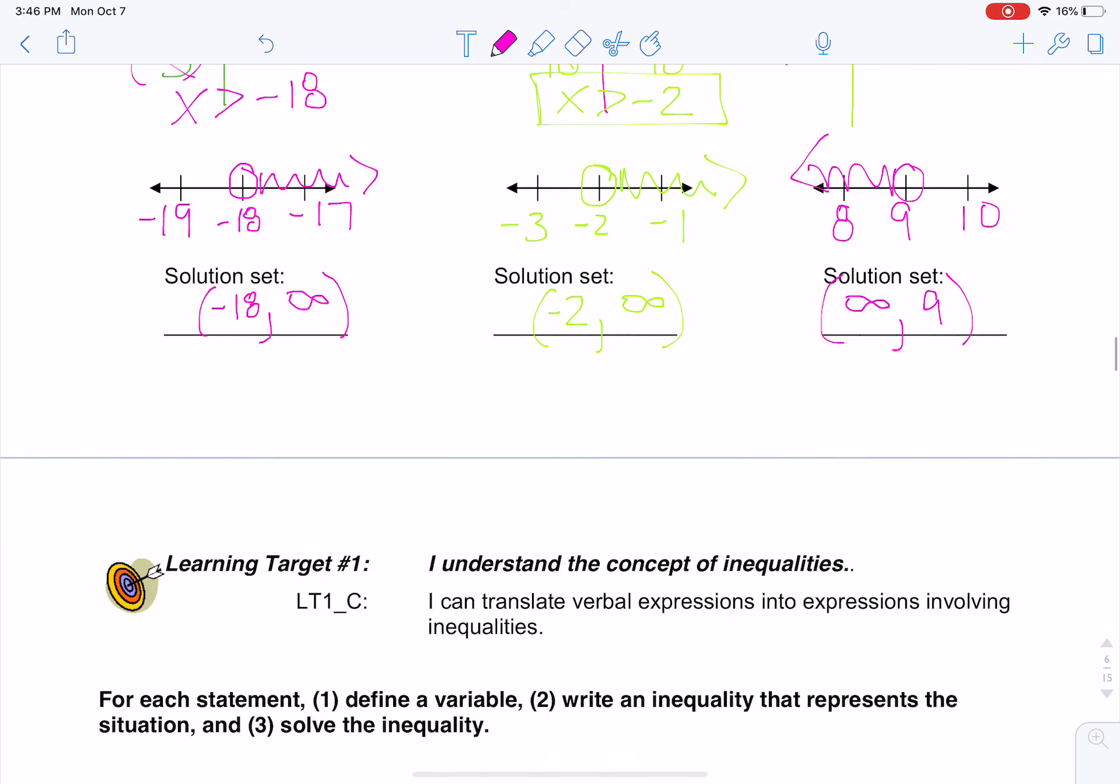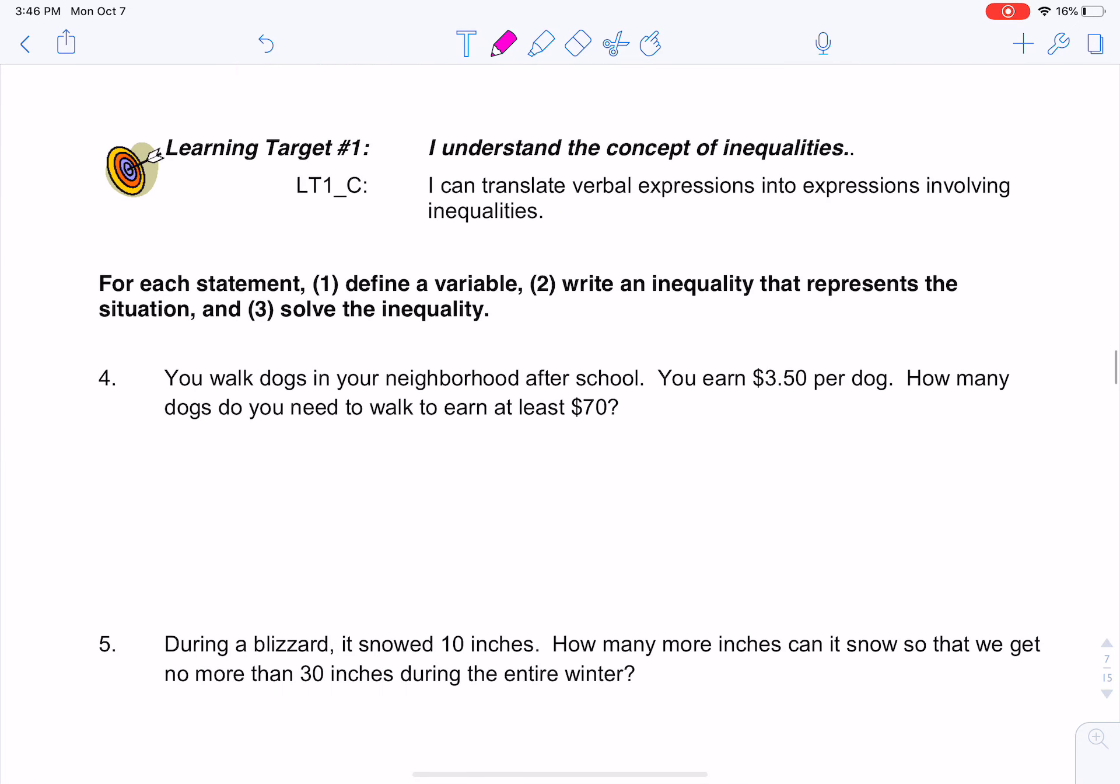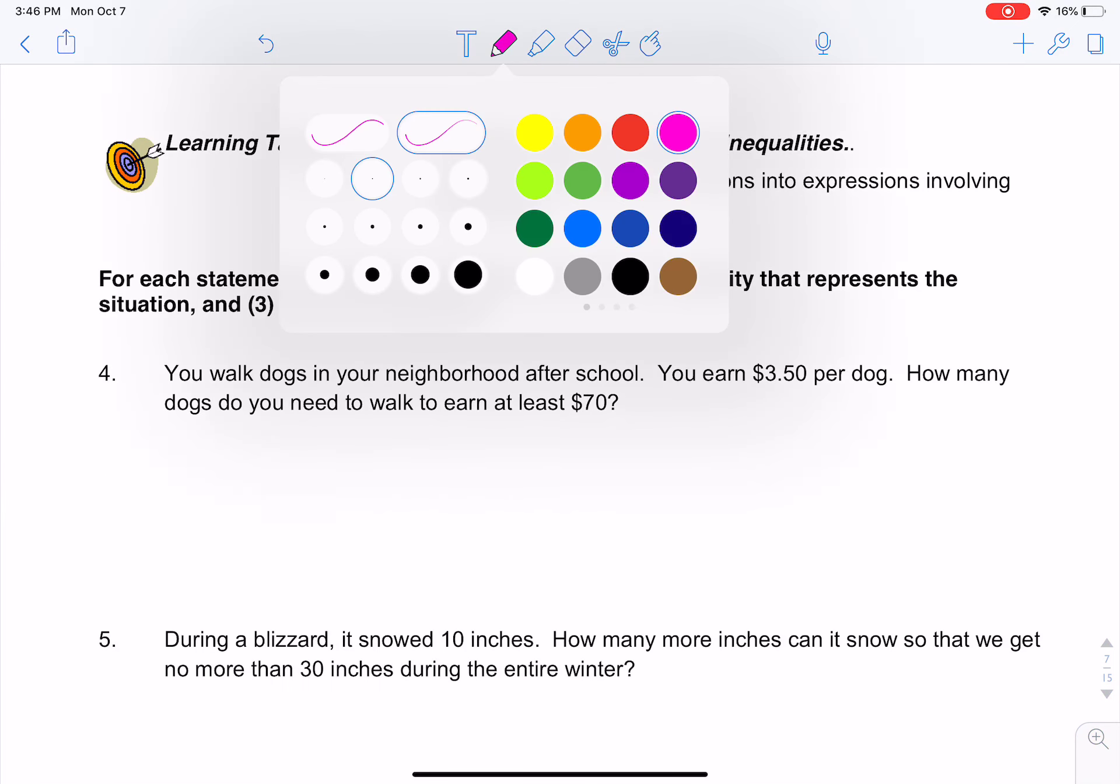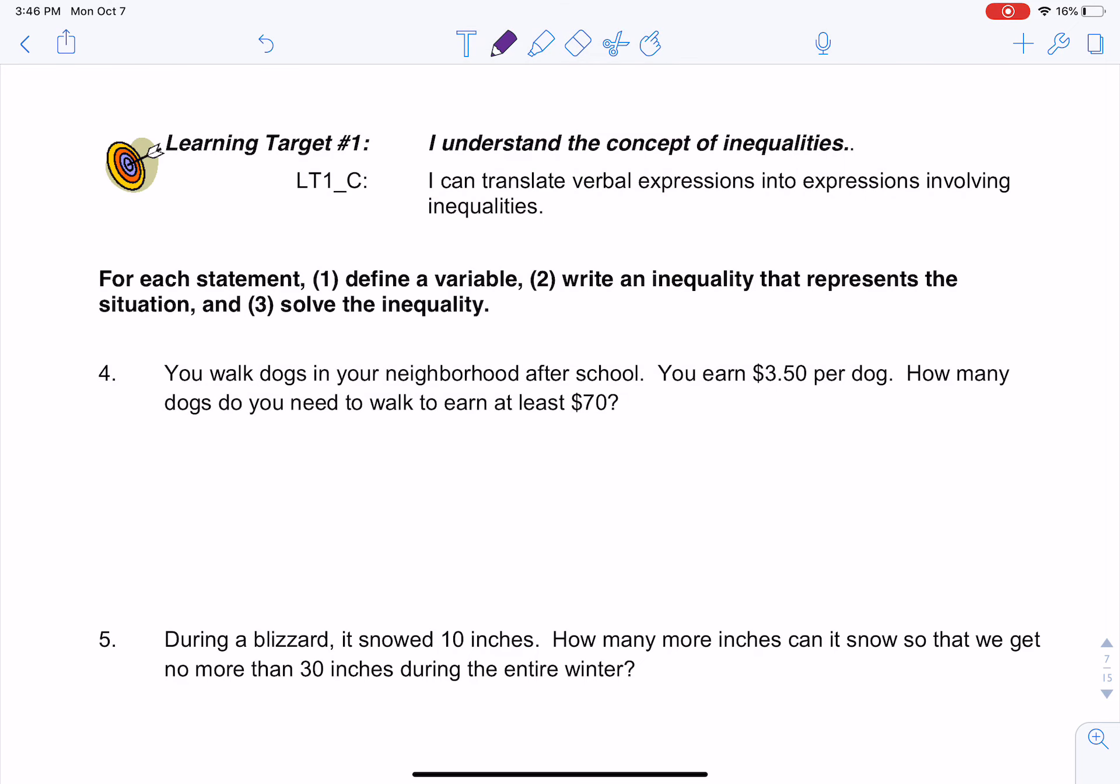Okay, so that's solving. A lot of review there. Now let's talk about translating, which can sometimes be the tricky part. So let us know if you need help with this. So let's read it and then figure out what we're going to do. So you walk dogs in your neighborhood after school. You earn $3.50 per dog. How many dogs do you need to walk to earn at least $70? So the most important part with these is to define a variable first. So I'm going to use x, and x is going to stand for the number of dogs. A lot of us skip this step, and then we screw things up. So x is going to be the number of dogs I need to walk.